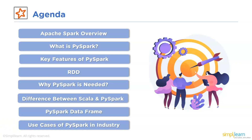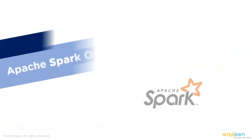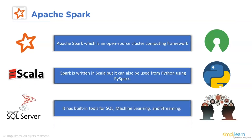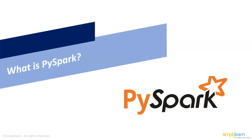In order to understand PySpark and its use in the big data world, we must first understand Apache Spark. Apache Spark is an open source cluster computing framework that is used to develop big data applications that can perform fast analytics over large data sets. Spark is written in Scala, but it can also be used from Python using PySpark. It is very popular and one of the most requested tools in the IT industry because it has inbuilt tools for SQL, Machine Learning and Streaming.